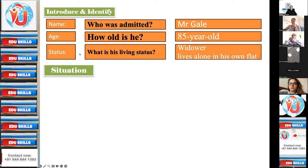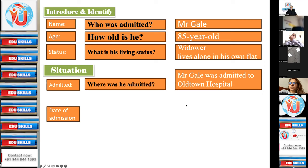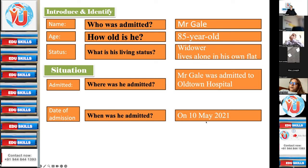Then situation: where was he admitted? Mr. Gale was admitted to Old Town Hospital. Date of admission — when was he admitted? On 10th May 2021. Note that he fell on the 9th — sometimes you make a mistake and write 9th May 2021, which will result in a penalty. So beware of the dates. He fell on the 9th, but he got admitted on the 10th.